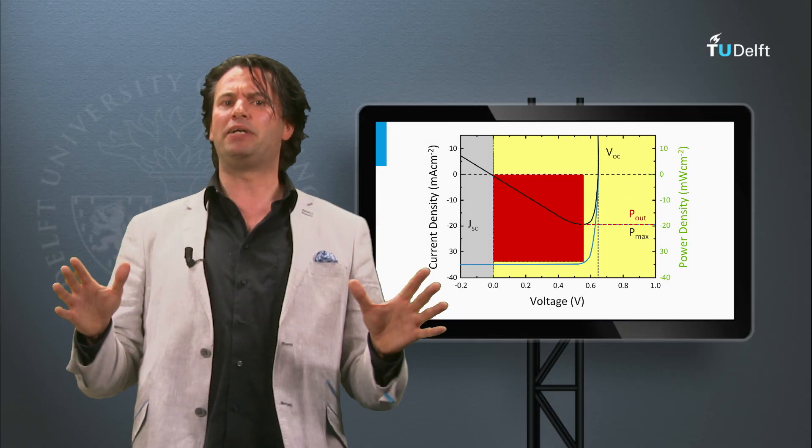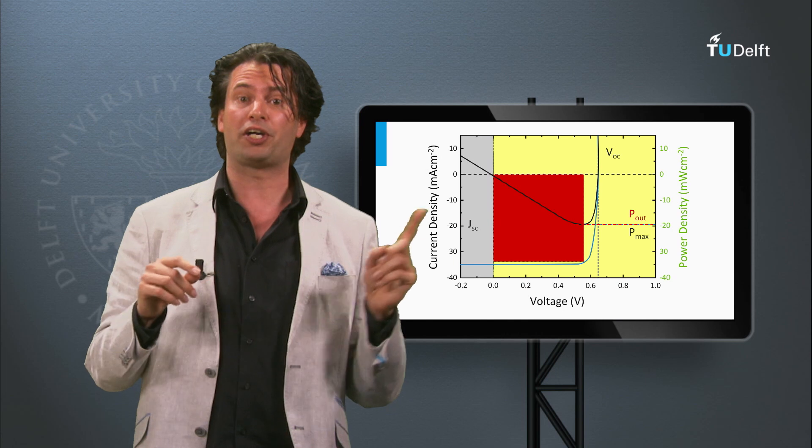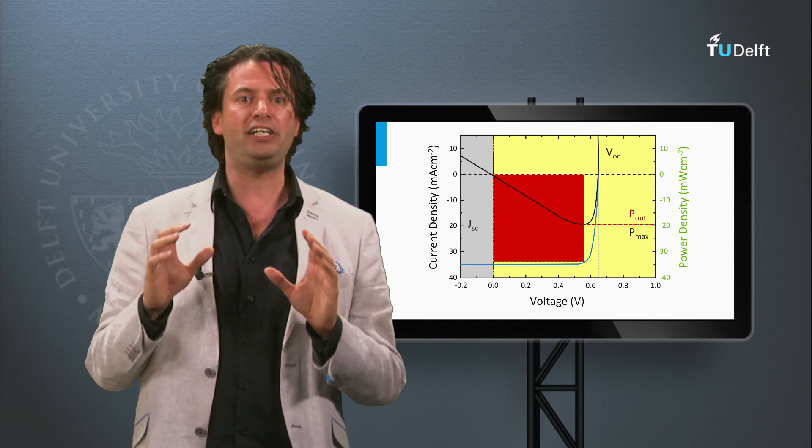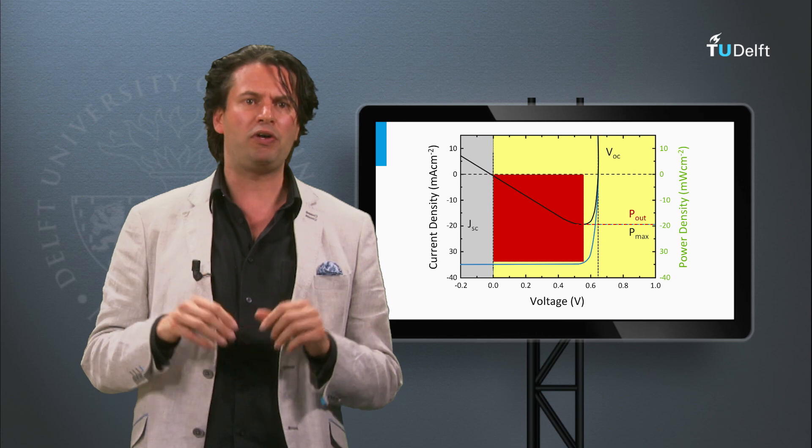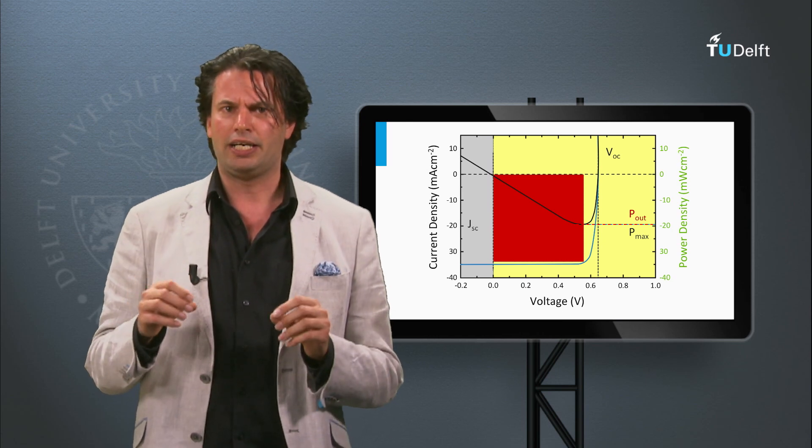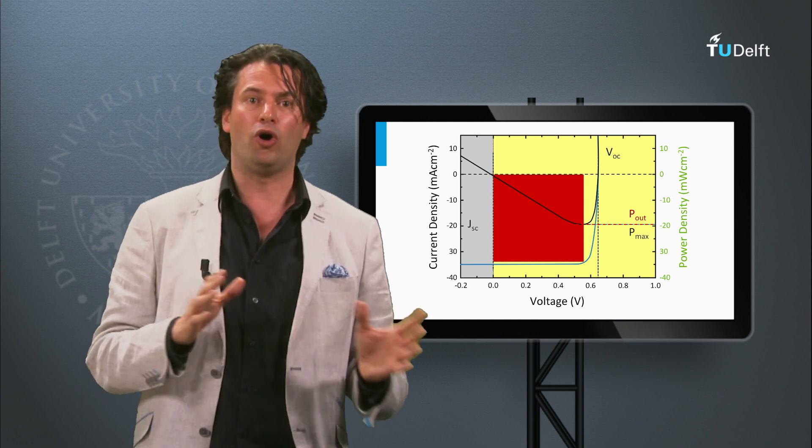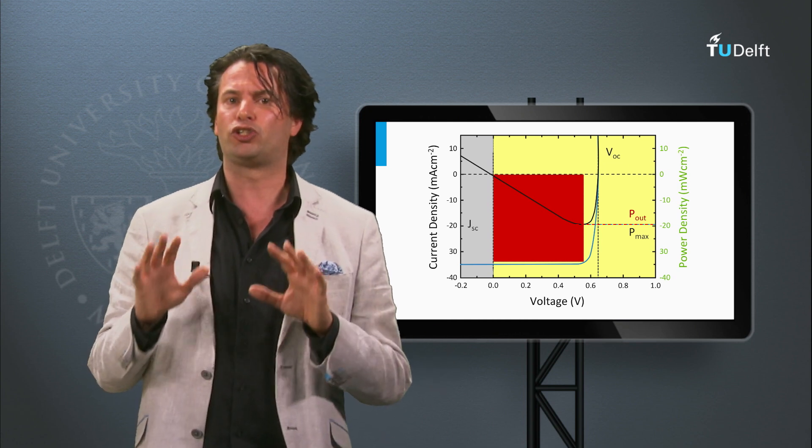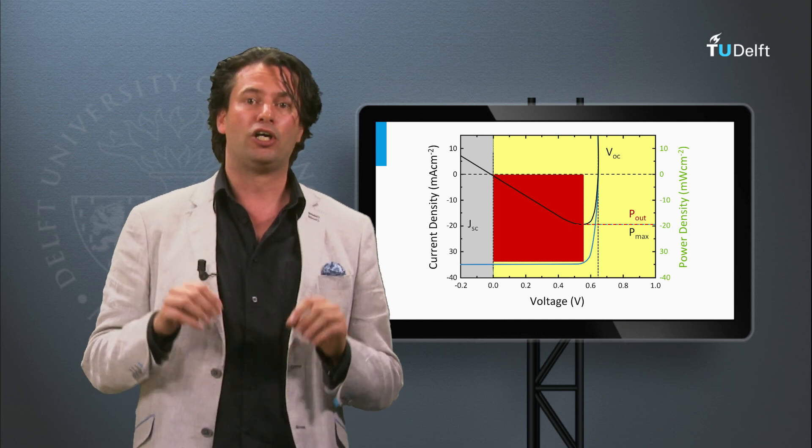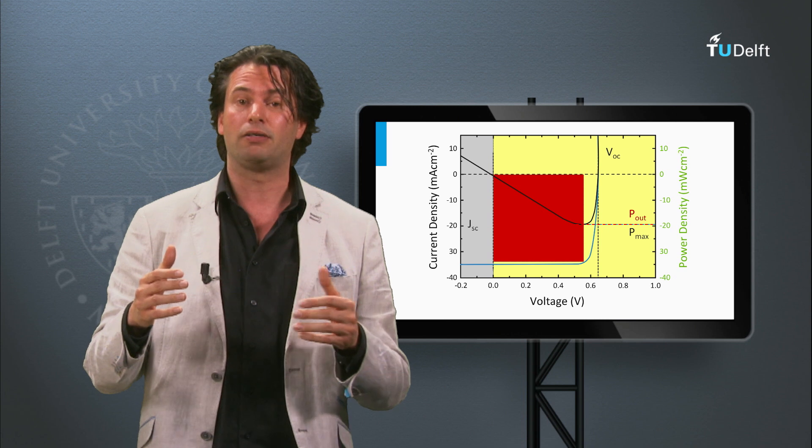This means that we need to tune the impedance of the load to have the solar cell working in its maximum power point. If we discuss PV systems later in this course, we will talk about maximum power point trackers. These are electronic devices which varies the load in time such that the solar panel is always working in its maximum power point, such that the maximum amount of electrical power can be generated by the solar panel.